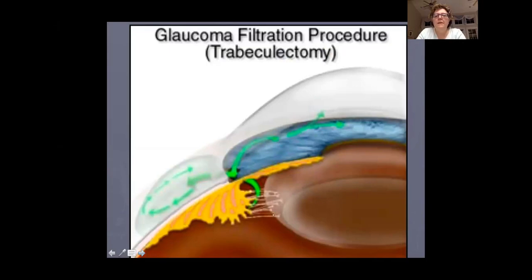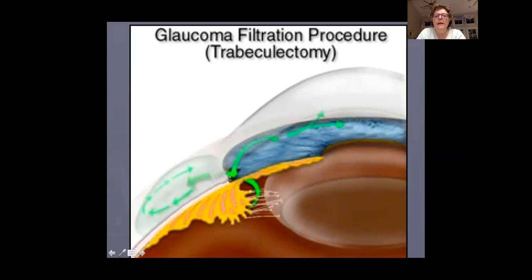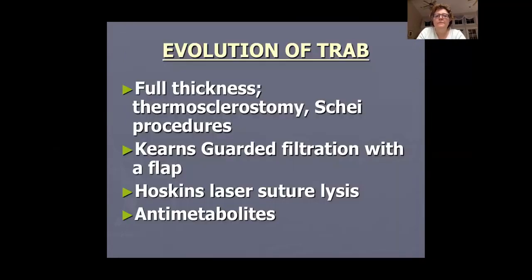This schematic shows the lens, ciliary body, and zonules. We create a space at the limbus — a hole that includes a little bit of sclera and a little bit of iris — so fluid that can't get into the trabecular meshwork well can exit from the anterior chamber through this hole into the subtenon space.